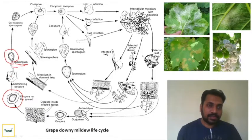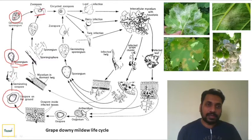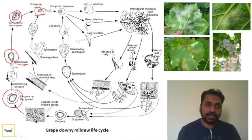The sporangium germinates and inside it we can see zoospores. These zoospores are liberated through an opening known as a papilla. Zoospores have two types of flagella: one is the whiplash type and the other is the tinsel type of flagella. After some period, the zoospore undergoes encystment - meaning it loses its flagella.